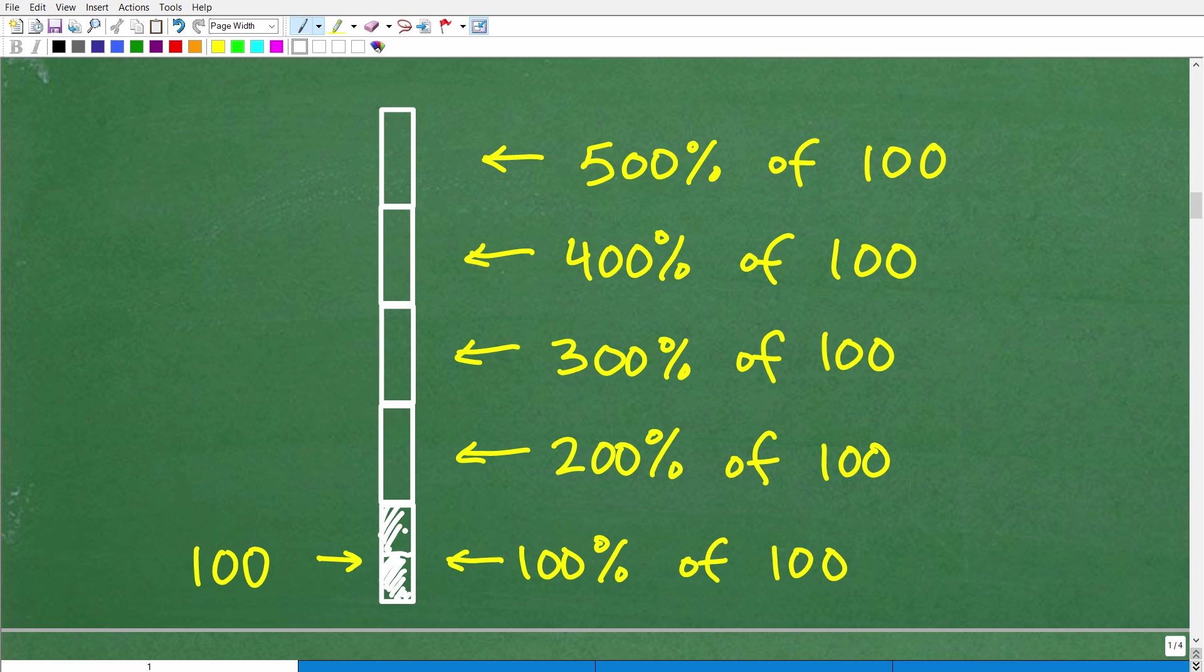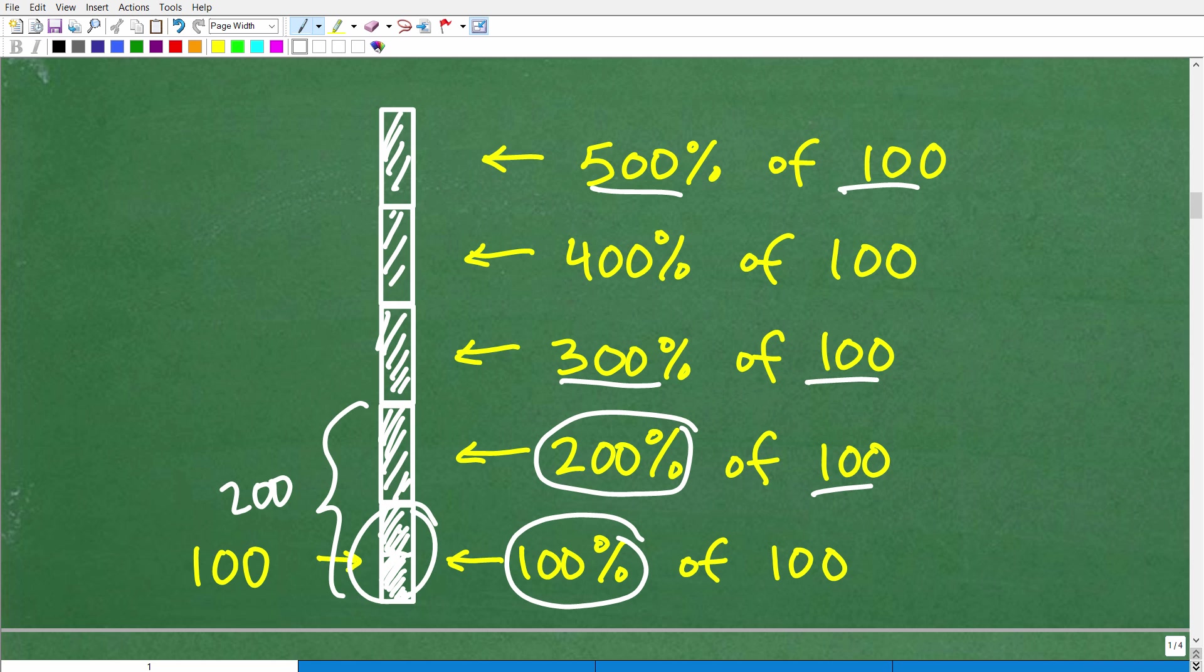But what does 200% of 100 mean? Well, if this is 100%, one full bar shaded, 200% of 100—100% of 100 is one of these full bars shaded. 200% of 100 is going to give us two bars, which would be 200 on our scale here. So you can see, we could continue to play this game. 300% of 100 would be three 100 bars stacked on one another, and we could keep doing this all the way up to 500% of 100. Here's 100, 500% is—this is 200, 300, 400, this is 500. This is what is equal to 500. 500% of 100 is 500. And 501% would be this right here, that 501.